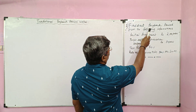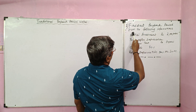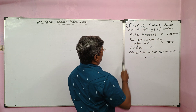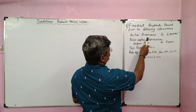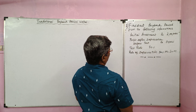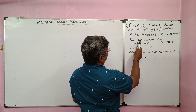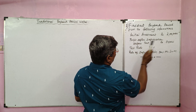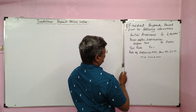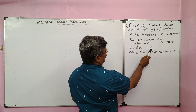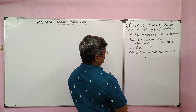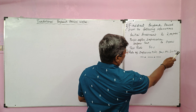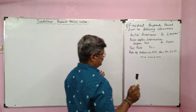Find out the payback period from the following information. Initial investment: 2 lakh. Profit after depreciation, before tax: 80,000. Tax rate: 50%. Rate of depreciation: 30% on straight line method.